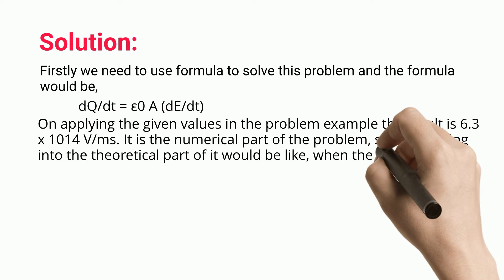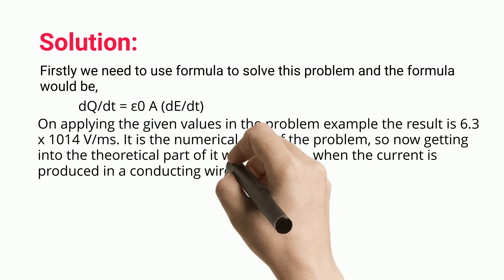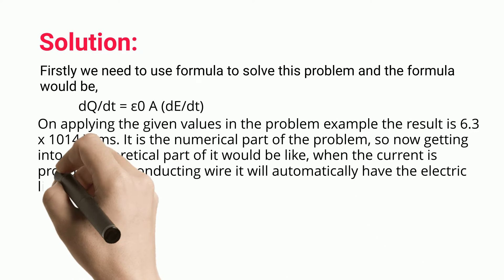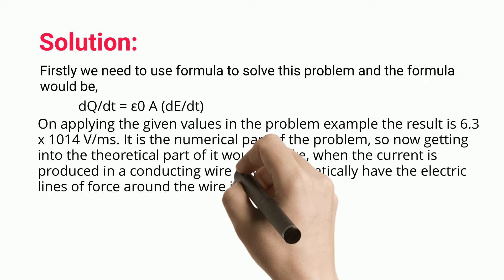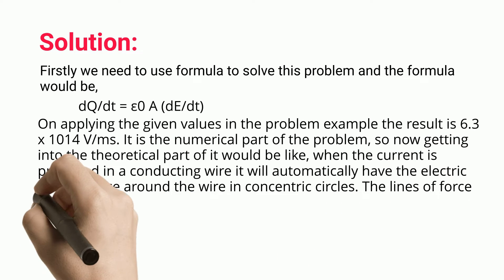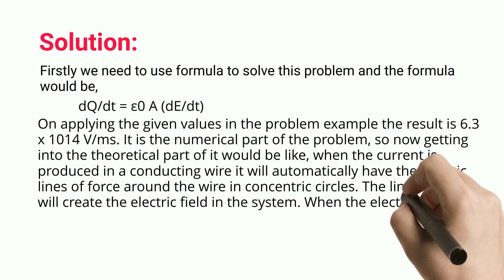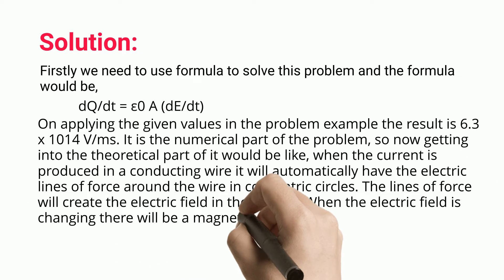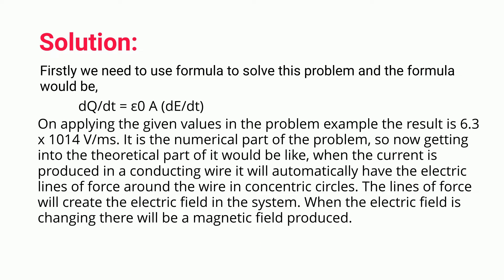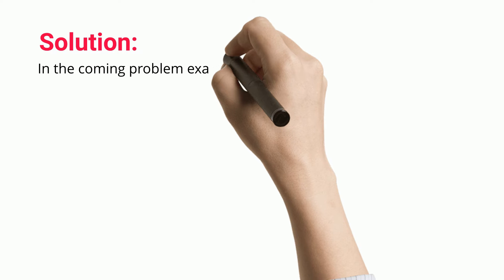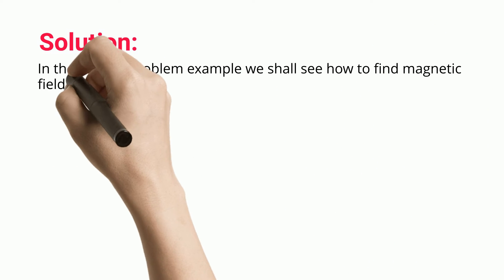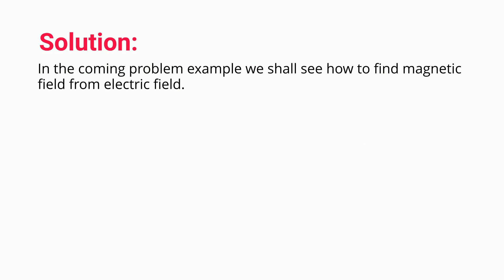Getting into the theoretical part: when current is produced in a conducting wire, it will automatically have electric lines of force around the wire in concentric circles. These lines of force create the electric field in the system. When the electric field is changing, a magnetic field is produced. In the coming problem example, we shall see how to find magnetic field from electric field.